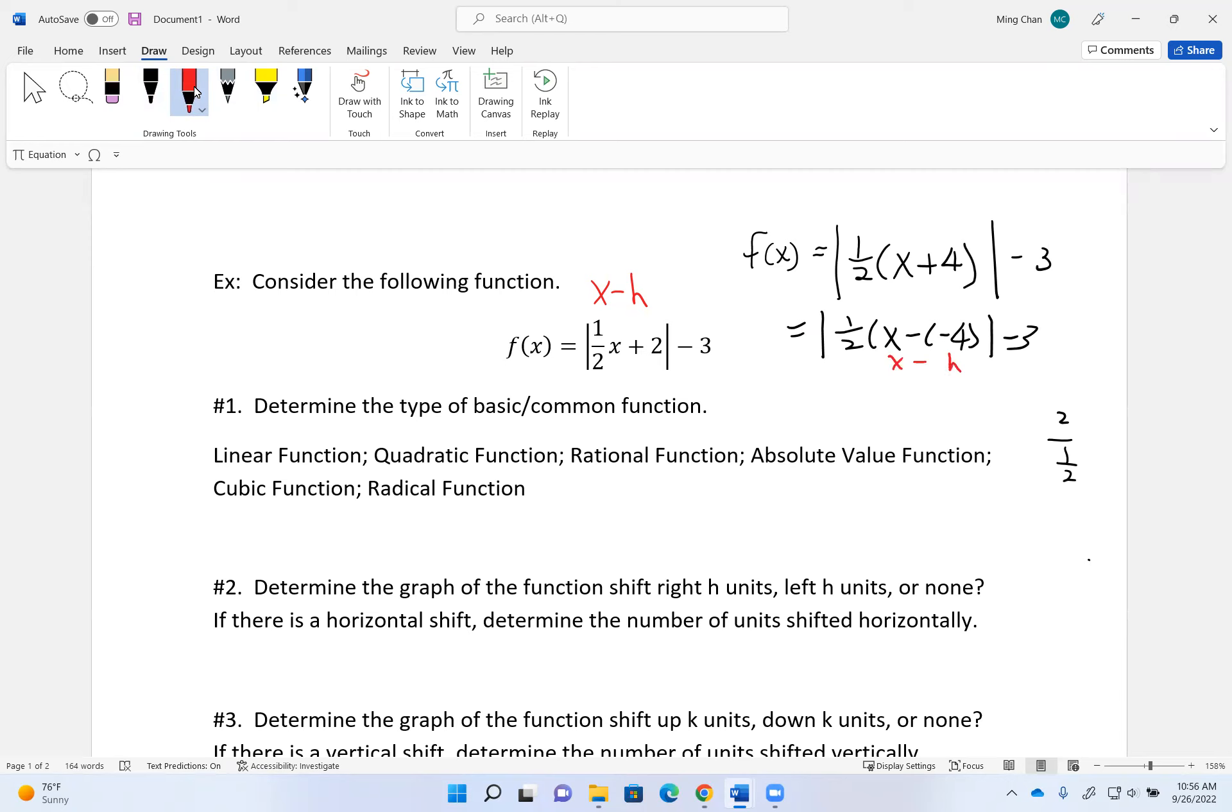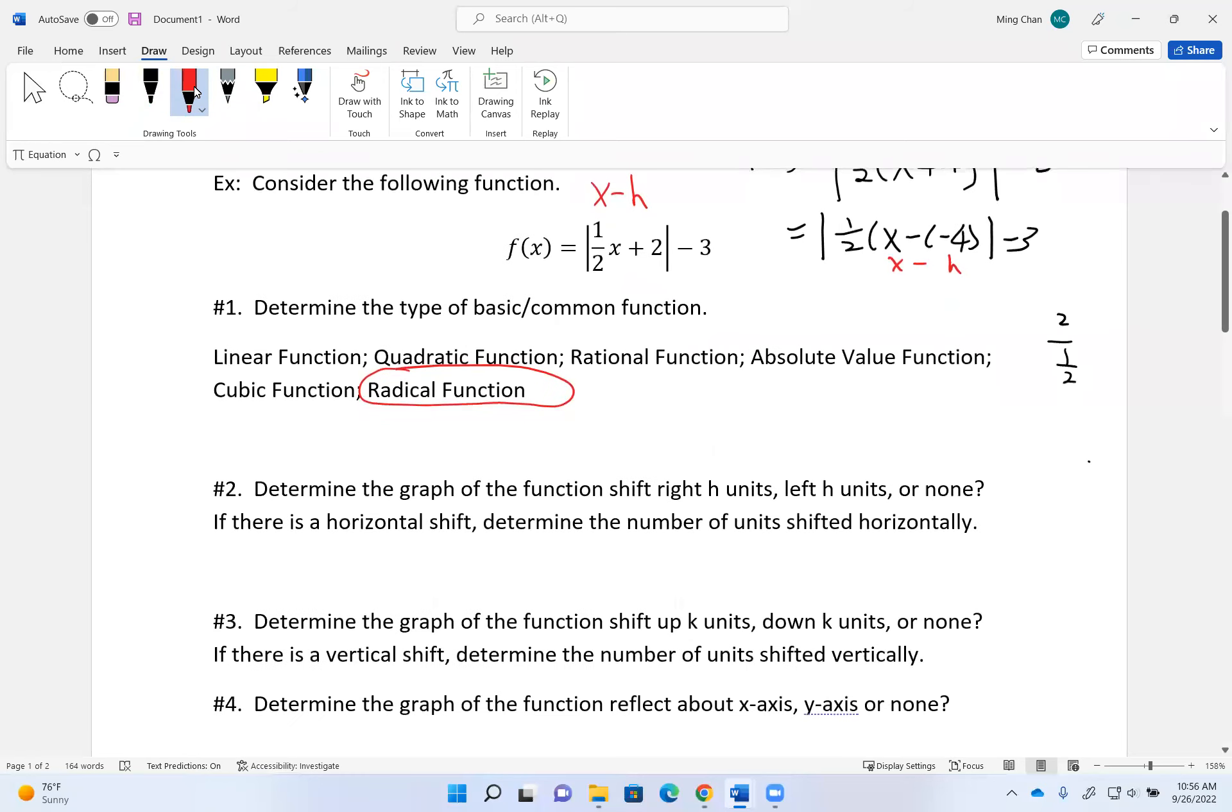This is a radical function. Horizontal shift: x minus h where h is negative 4. So technically this is where my correction is. Your function has shifted to the left four places.